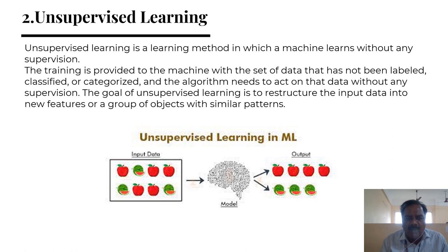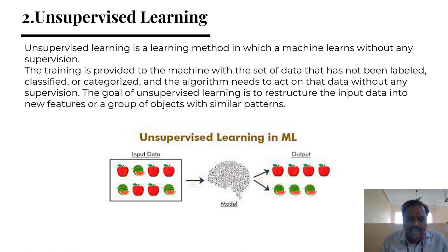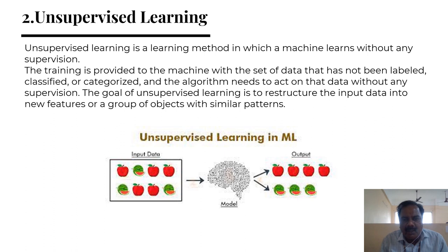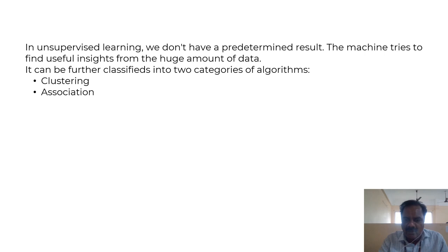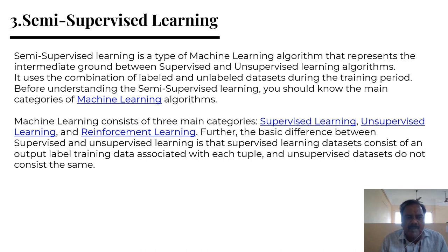Unsupervised learning is a method where the machine works without any supervision — there is no labeled data. For example, you are given inputs of apples, guavas, and oranges without labels, and the model must separate them into groups. The dataset is not labeled. The goal of unsupervised learning is to restructure the input data into new features and find similar patterns. It has two categories: clustering and association.